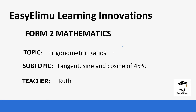Welcome to EZLE Learning Simplified. My name is Ruth and today we are going to be learning on Form 2 mathematics, the topic of trigonometric ratios. Today we are going to be looking at tangent, cosine and sine of some special angles — one of them is 45 degrees, and then the next lesson we look at the other degrees.